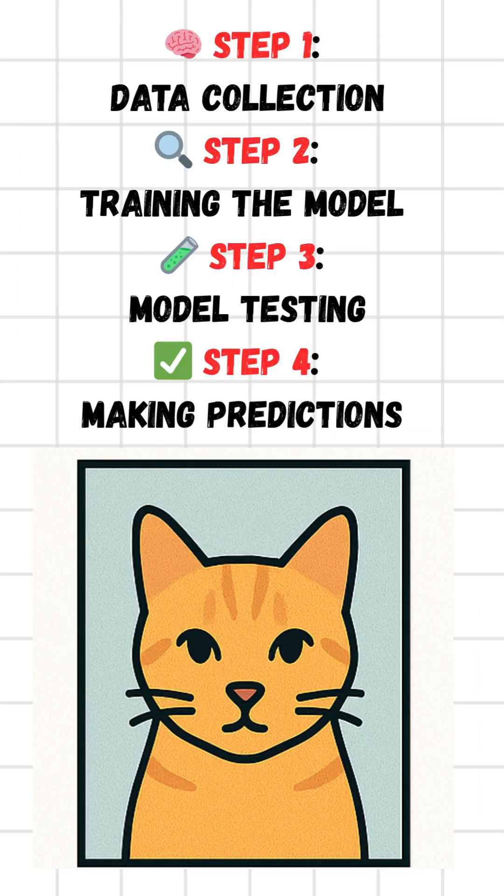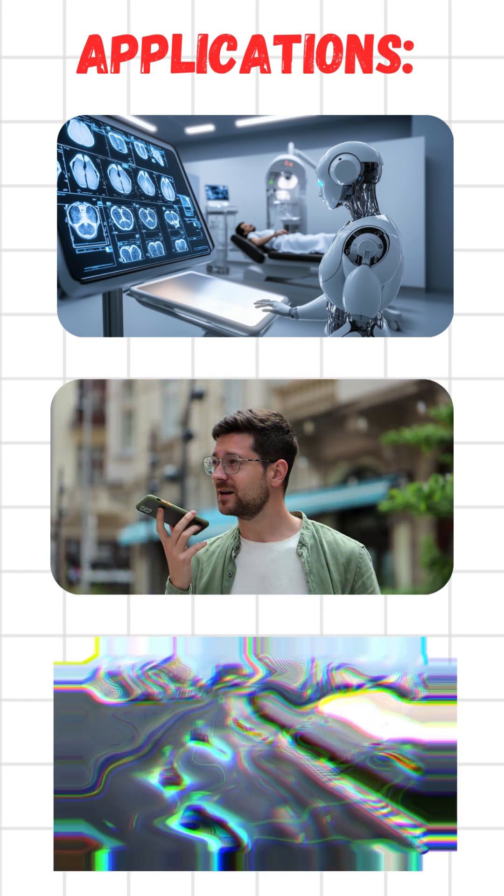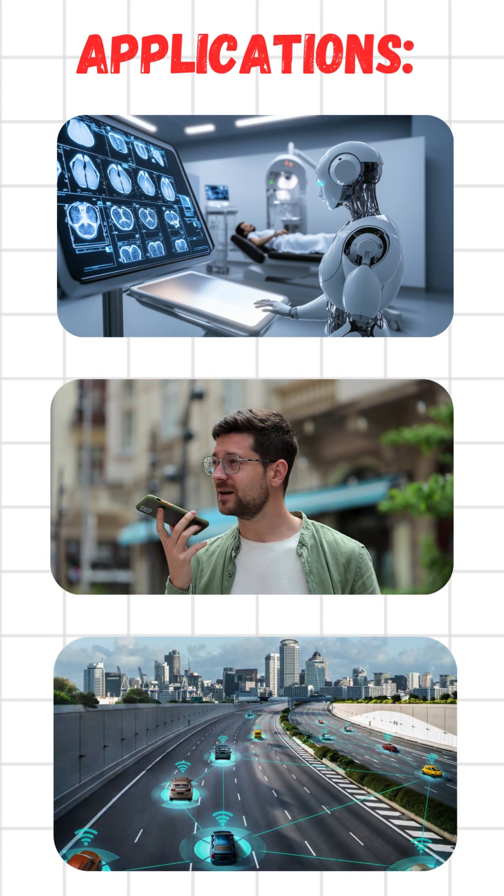In short, instead of telling a computer how to do a task, we give it data, and it figures it out. And the cool part: machine learning powers everything, from voice assistants to self-driving cars. It's not magic—it's math, data, and learning.